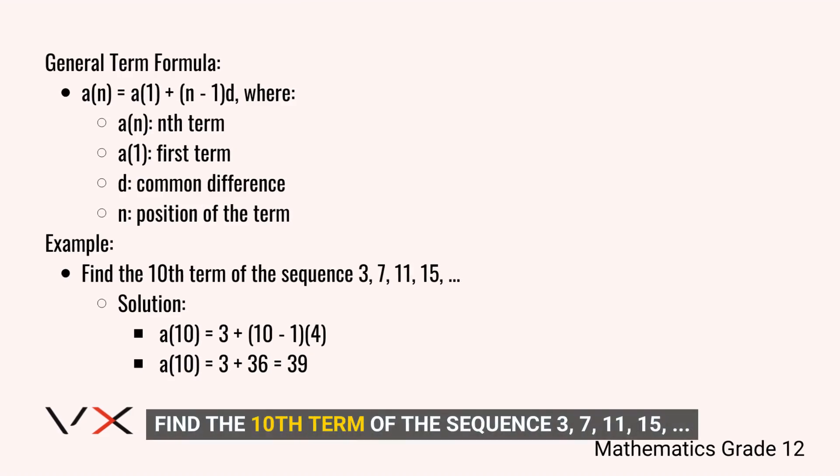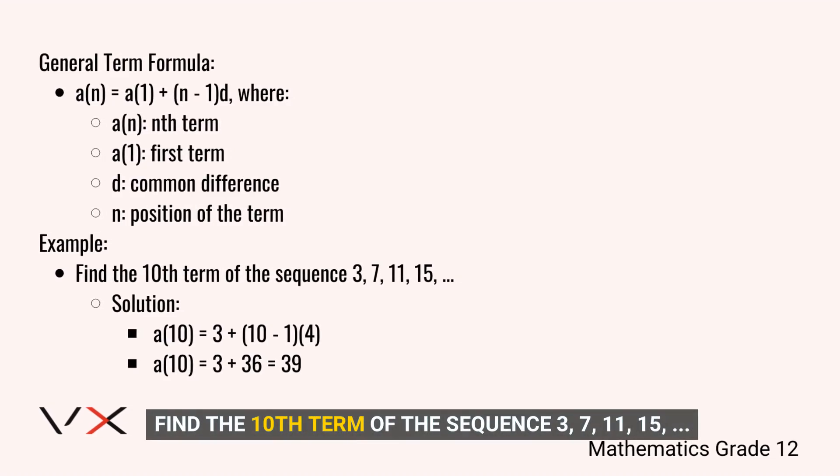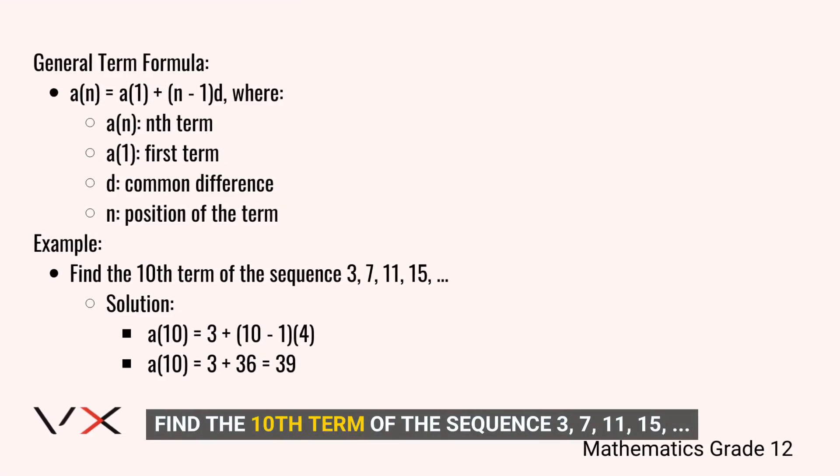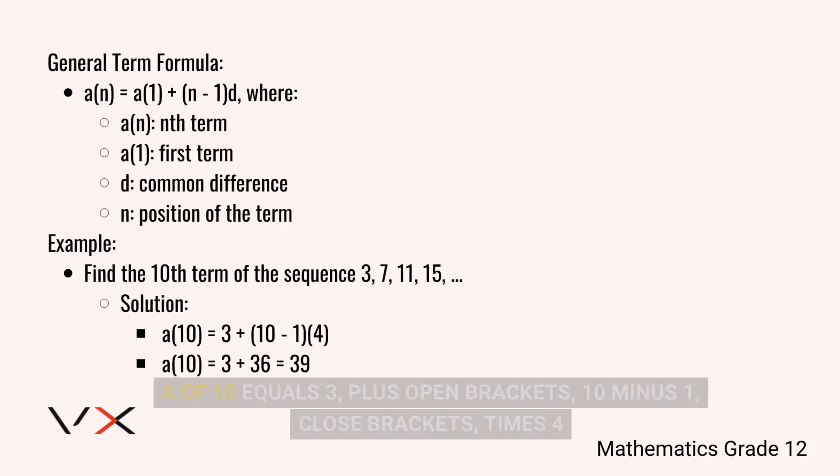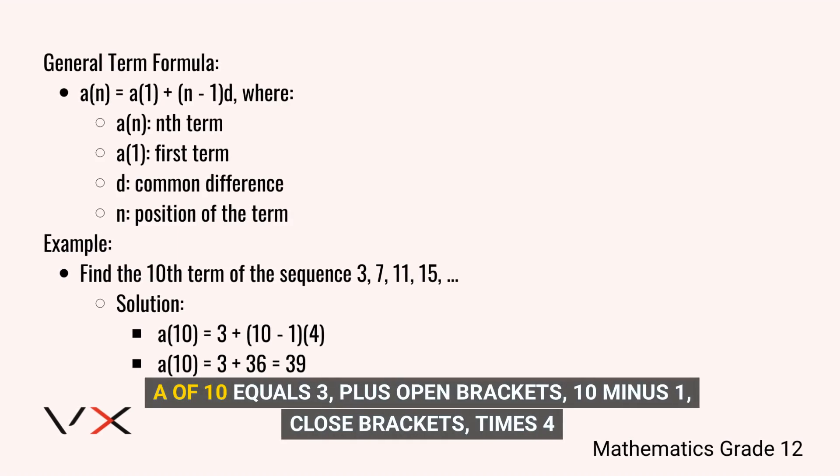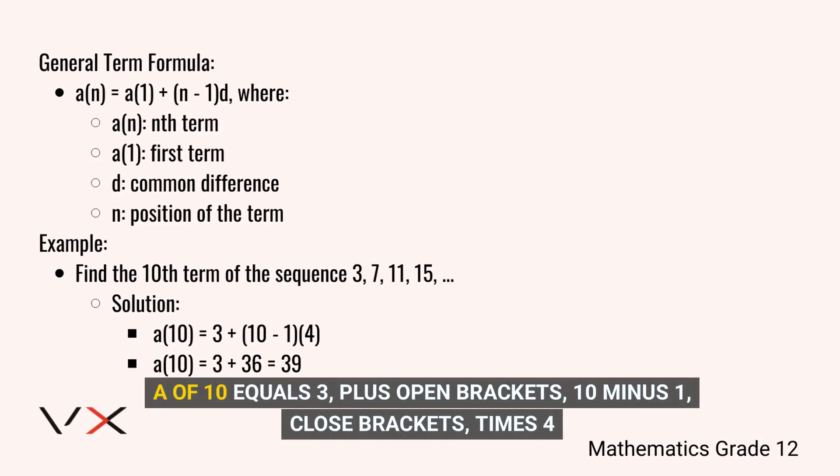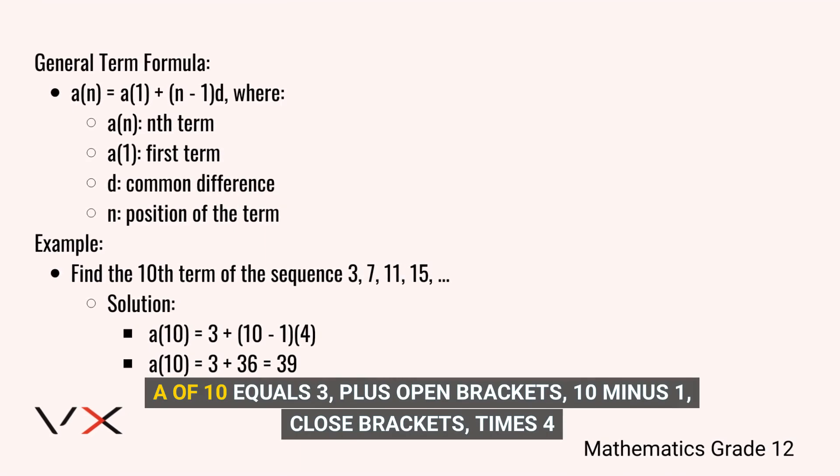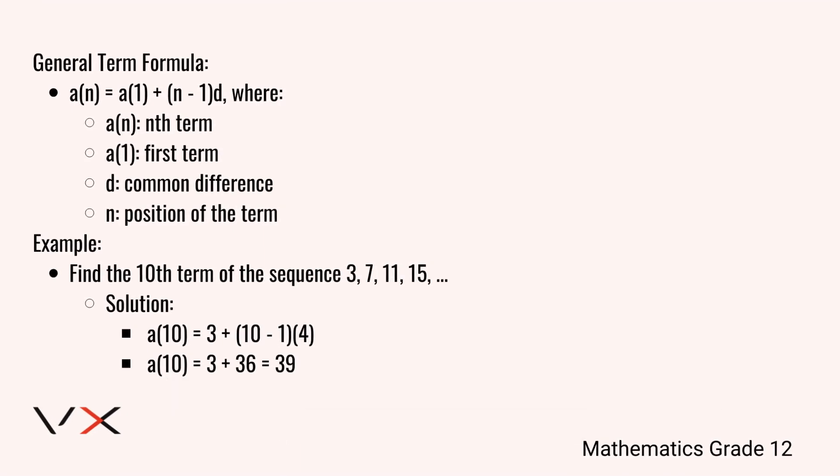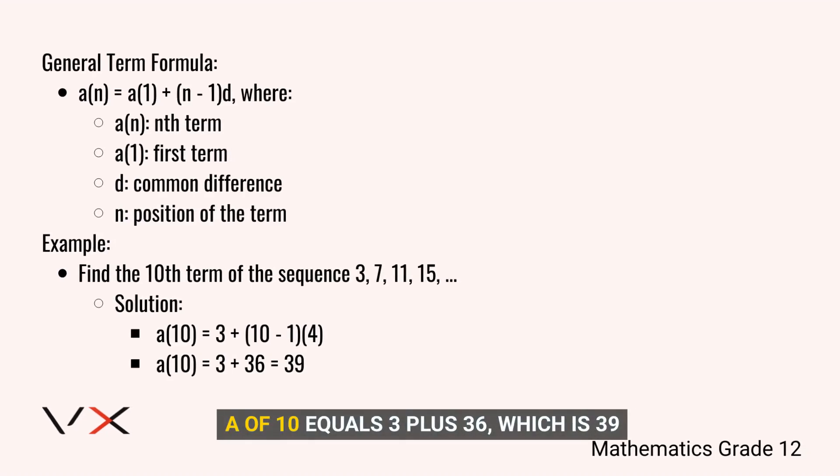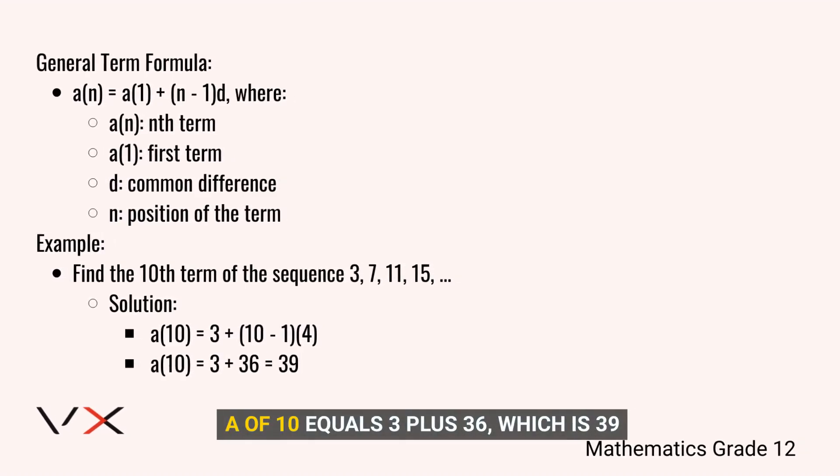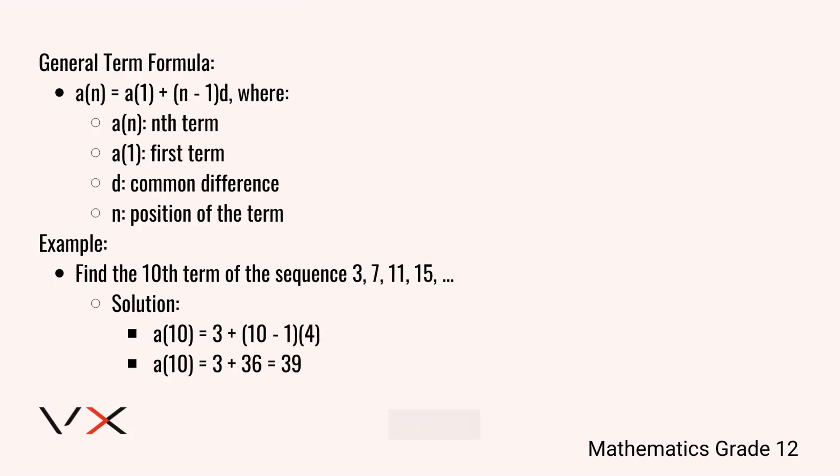Example: Find the tenth term of the sequence 3, 7, 11, 15. a(10) = 3 + (10-1) × 4. a(10) = 3 + 36, which is 39. Great.